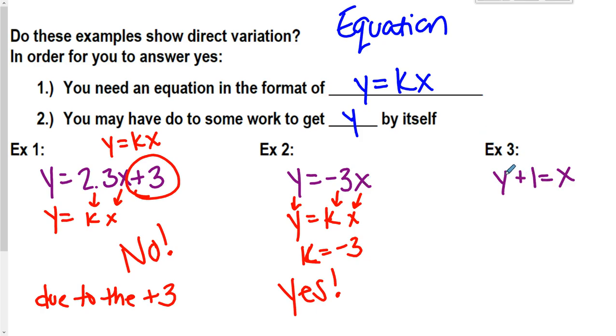Alright, last one. So this is what I'm talking about. Sometimes you might have to do a little bit of work. Because if I look to see, y is not by itself. I have y plus one. And I want the equation as y equals. So I can't look at this until I have y equals. So I need to get y alone. So I'm going to minus one from each side. So I get y is equal to x minus one. Well, when I do that, I have this minus one. And if we look from example one, I know that the answer to that is then no. Because direct variation does not have any pluses. It does not have anything added or subtracted to it.